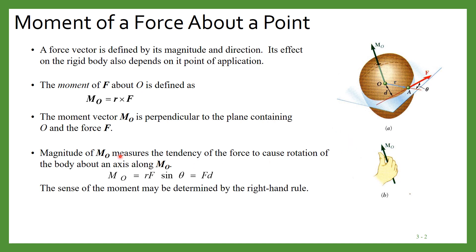The magnitude of MO can be calculated by the equation: MO equals R times F times sin(θ), where θ is the angle between F and the displacement vector OA. So θ is that angle, R is the magnitude of this displacement, and F is the magnitude of this force.